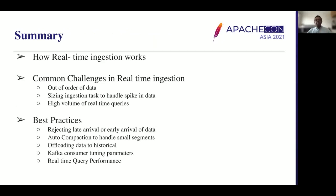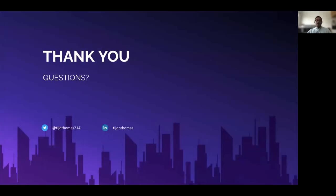Let's conclude. We discussed how real-time ingestion works and the common challenges: out-of-order data, small segments from spike sizing, high volumes of real-time queries, and how to adjust num threads. We covered best practices: rejecting late or early arrival of data, configuring auto-compaction, offloading data to historical, Kafka consumer tuning parameters, and improving real-time query performance by increasing num threads. Thank you for this opportunity. Any questions?